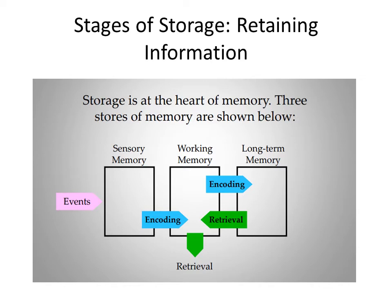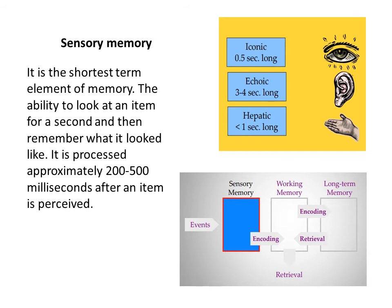The stages of storage are at the heart of memory. There are basically three stages of storage: sensory memory, working or short-term memory, and long-term memory. Sensory memory processes information gathered through your five senses. It holds information for an extremely brief period of time — less than a second after the original stimulus has stopped. It is the shortest-term element of memory, processed approximately 200 to 500 milliseconds after the item is received.